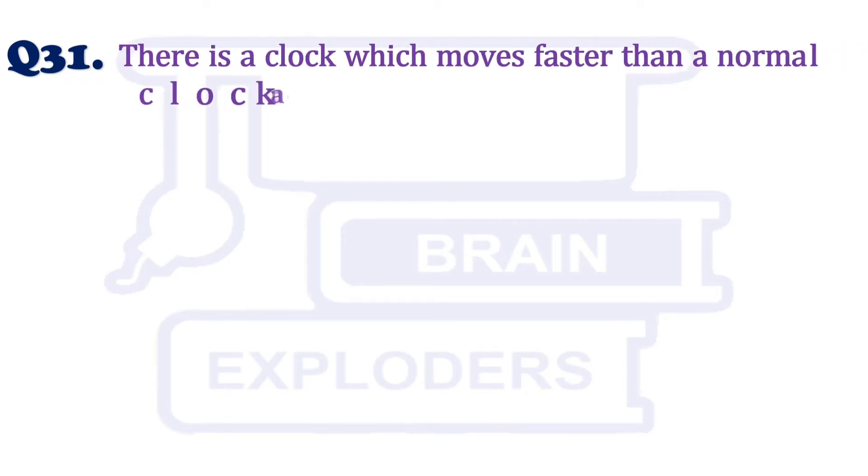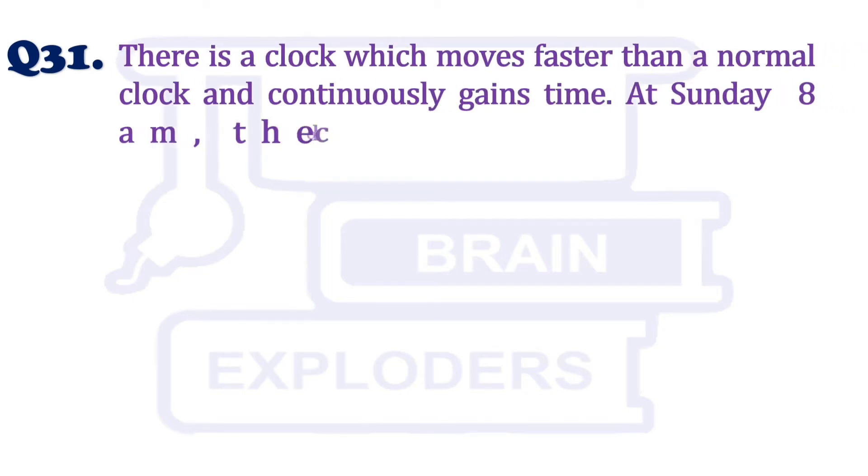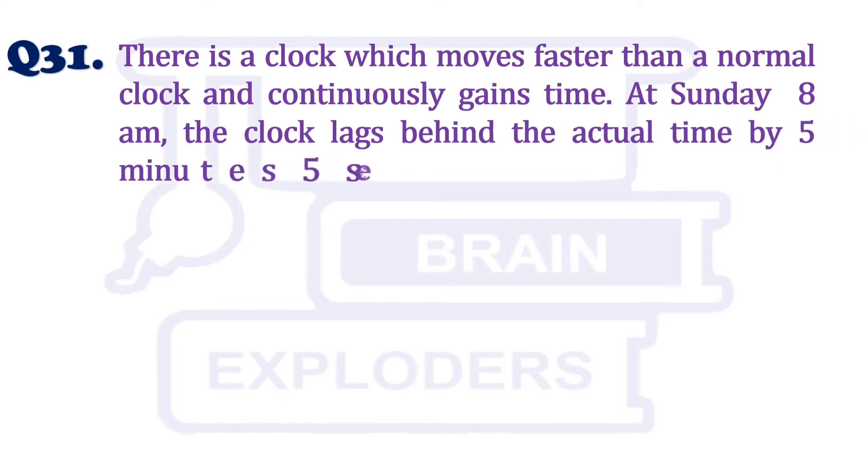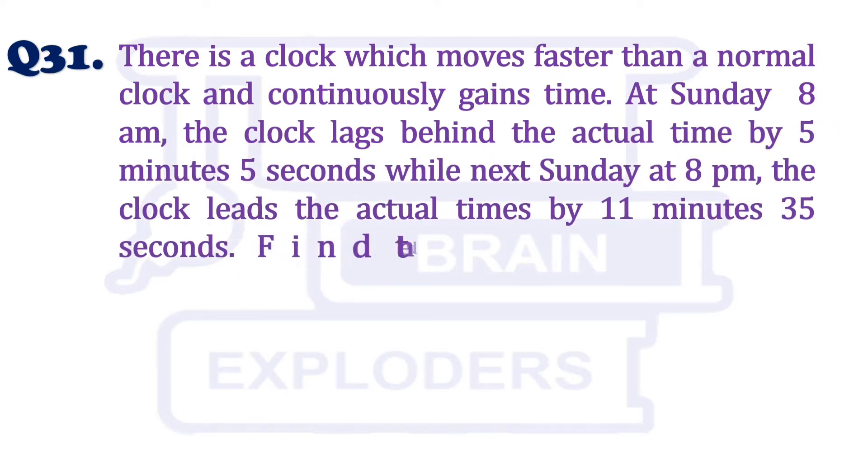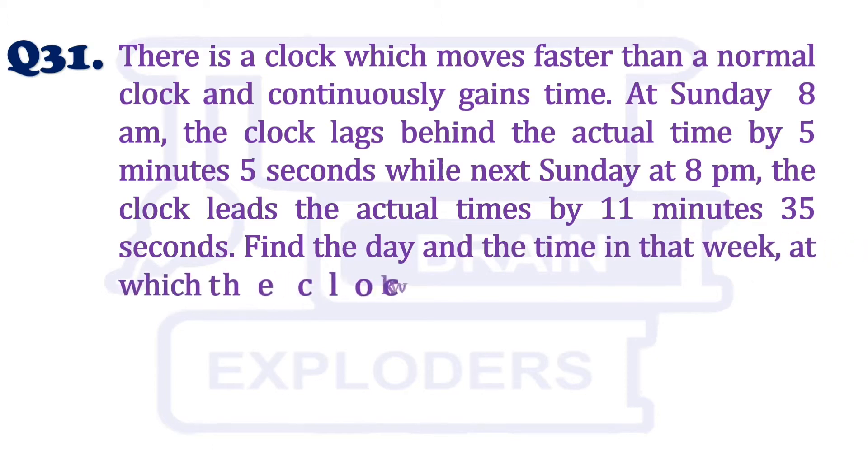There is a clock which moves faster than a normal clock and continuously gains time. At Sunday 8 am, the clock lags behind the actual time by 5 minutes 5 seconds, while the next Sunday at 8 pm, the clock leads the actual time by 11 minutes 35 seconds.